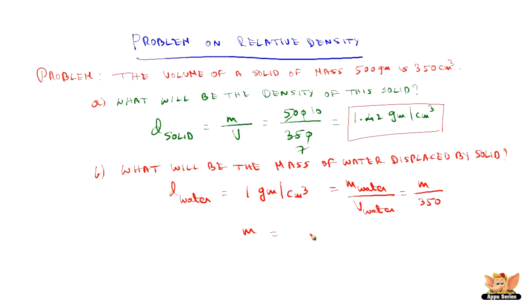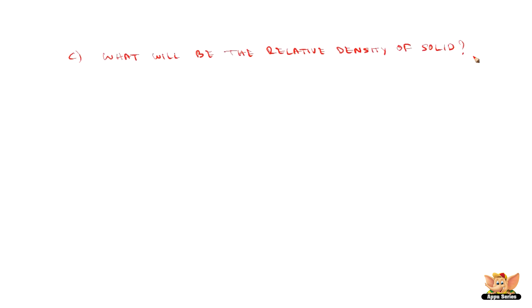So the mass of water becomes 350 grams. Now we know the mass of water displaced. We will now find what will be the relative density of the solid. We have found the density of the solid and the mass of water that is displaced.